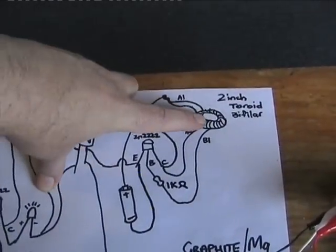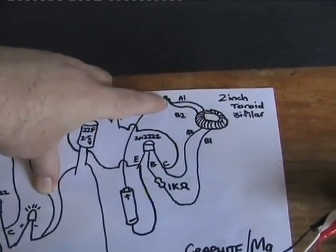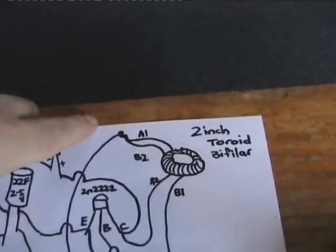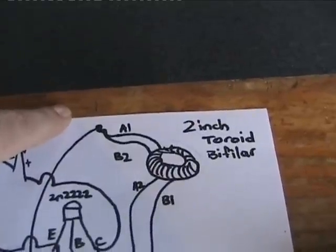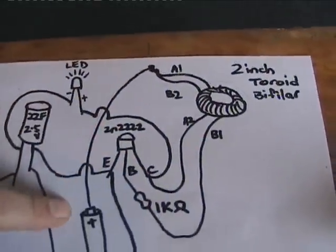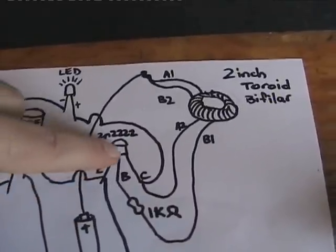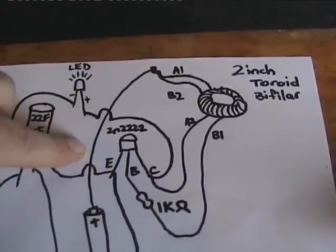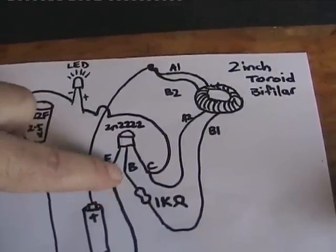It's a 2-inch bifilar wound toroid. You can see the A1 and B2 joined together to go down to the anode of the power source. The transistor is a 2N2222 and there's a 1K ohm resistor coming off the base.